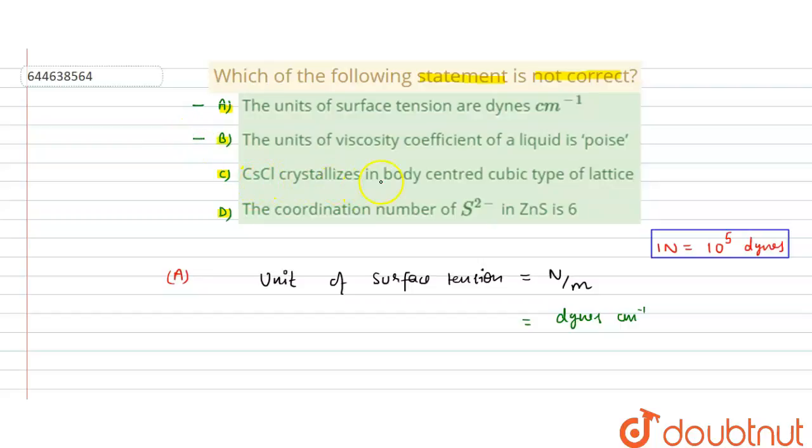CsCl crystallizes in body centered cubic type of lattice. Yes, this is also correct. This is BCC. All the Cl are on the corners and Cs is in the body part.